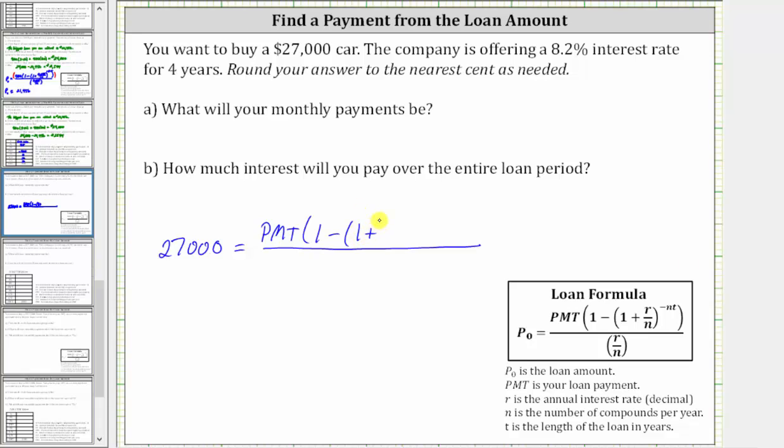Which gives us one plus r is 8.2%, which as a decimal is 0.082, divided by n, the number of compounds per year. Since you will make monthly payments, we'll assume the interest is compounded monthly, and therefore n is 12. And this sum is raised to the power of negative n times t.